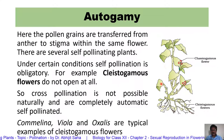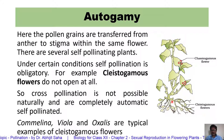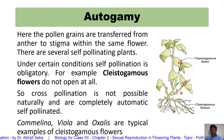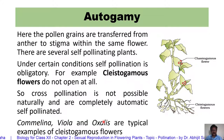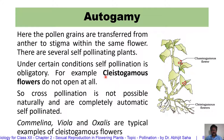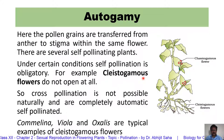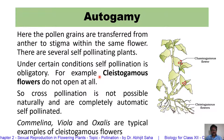Here you can see the example — this plant is Commelina. It has both chasmogamous flowers, which open, and cleistogamous flowers, which do not open. Some common examples are Commelina, Viola, and Oxalis. Cleistogamous flower means a flower which does not open, and in cleistogamous flowers, autogamy is a must.